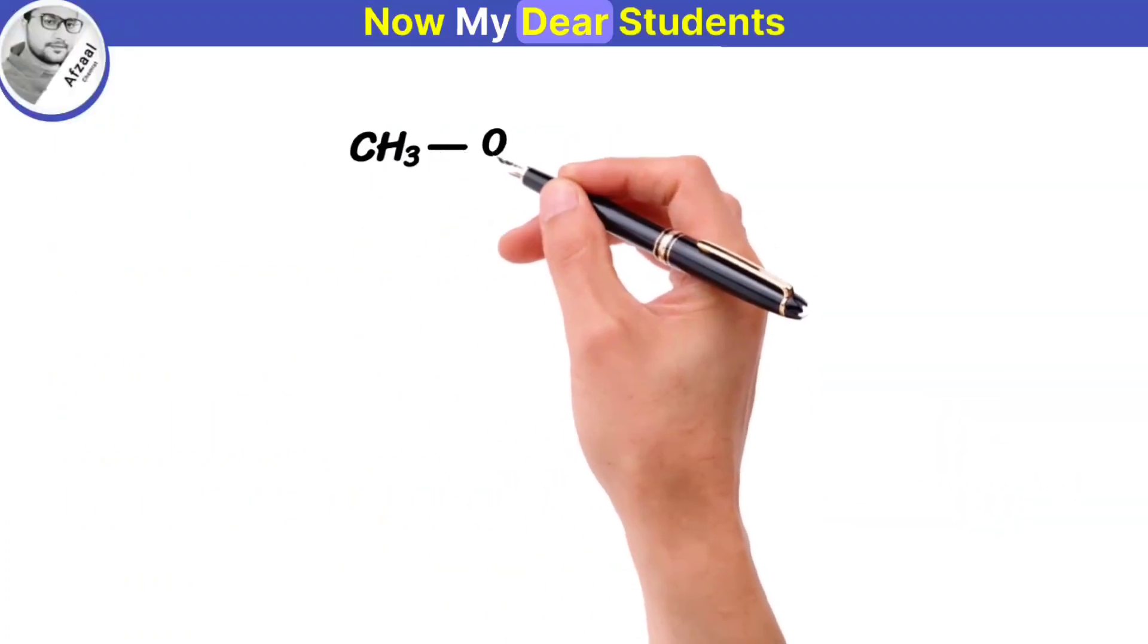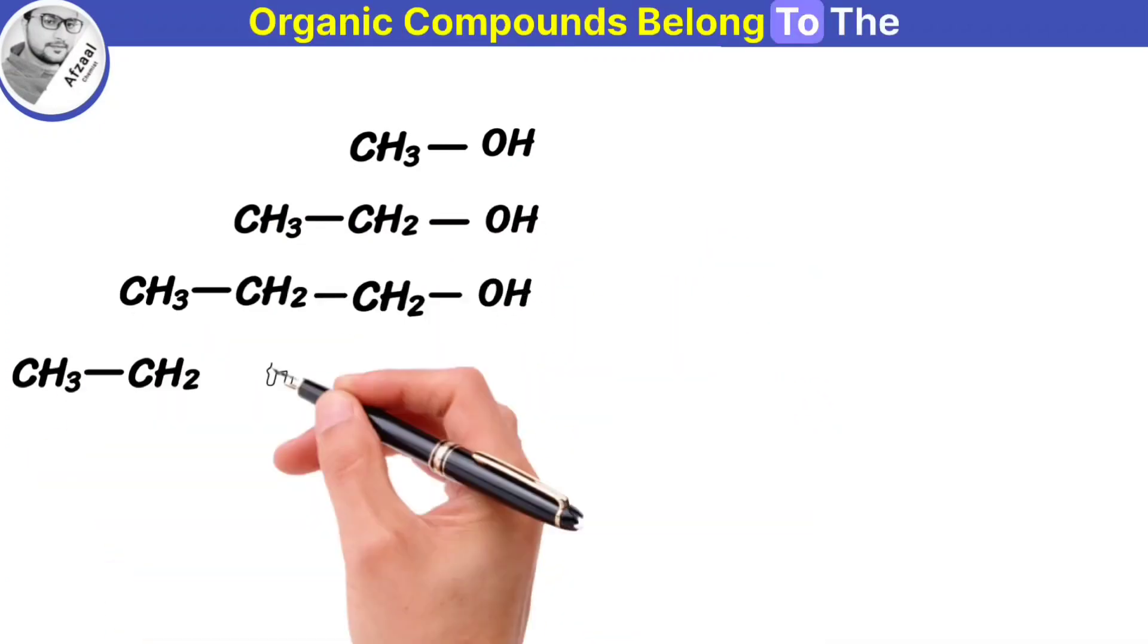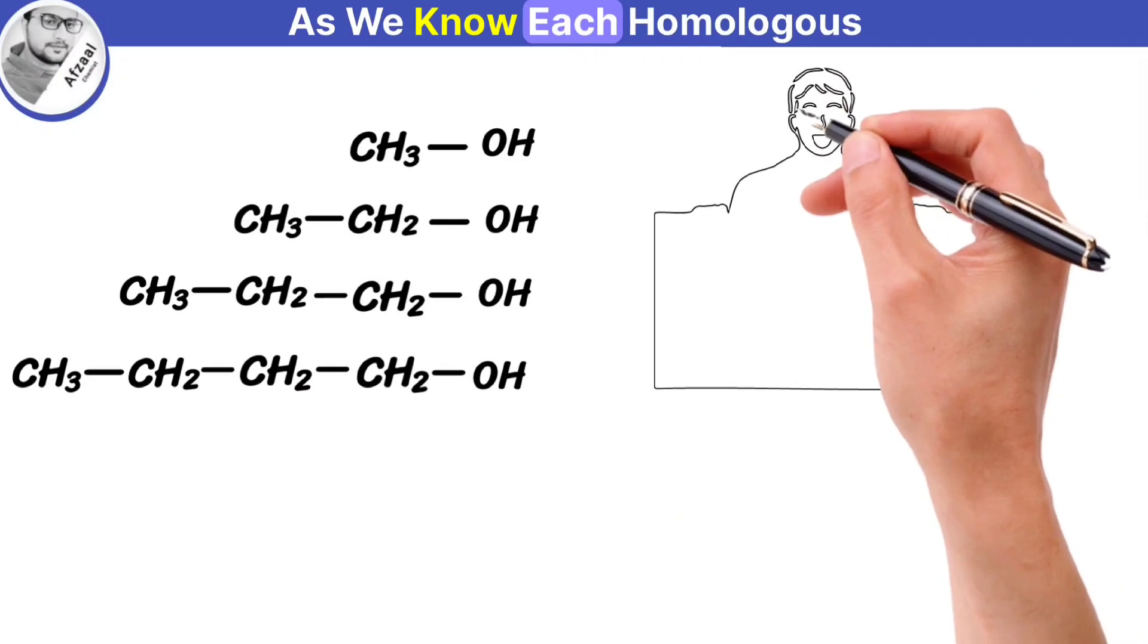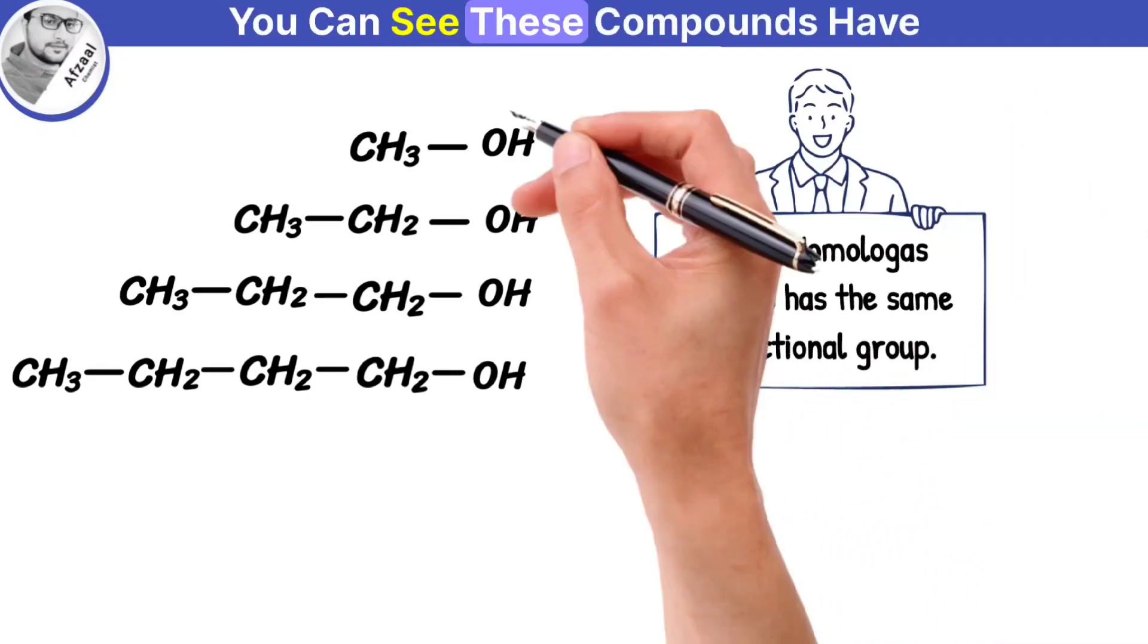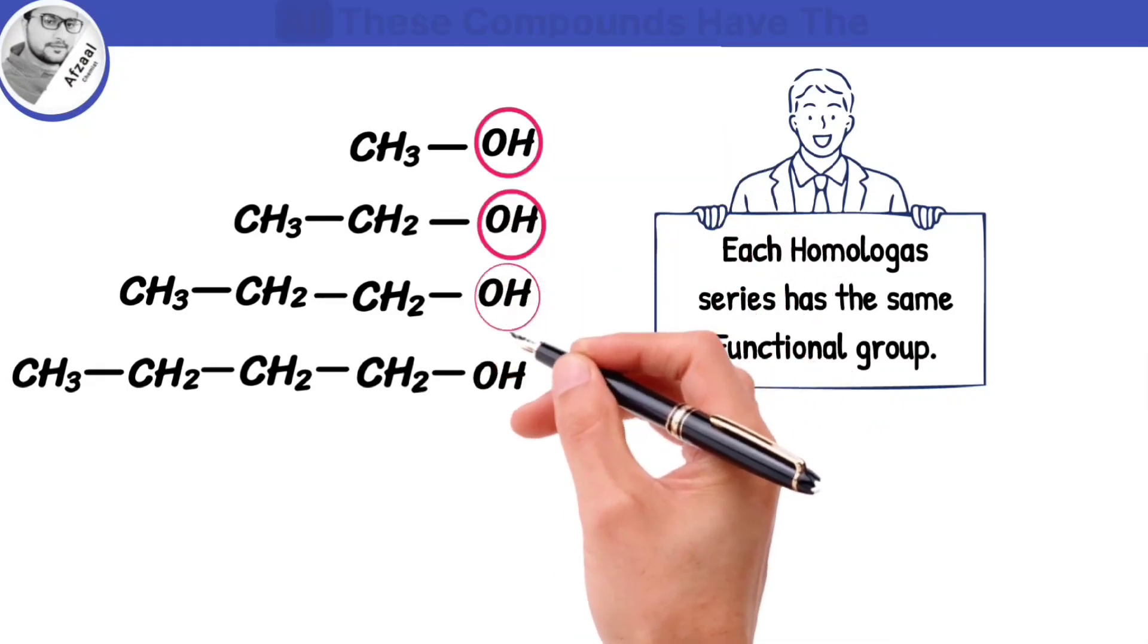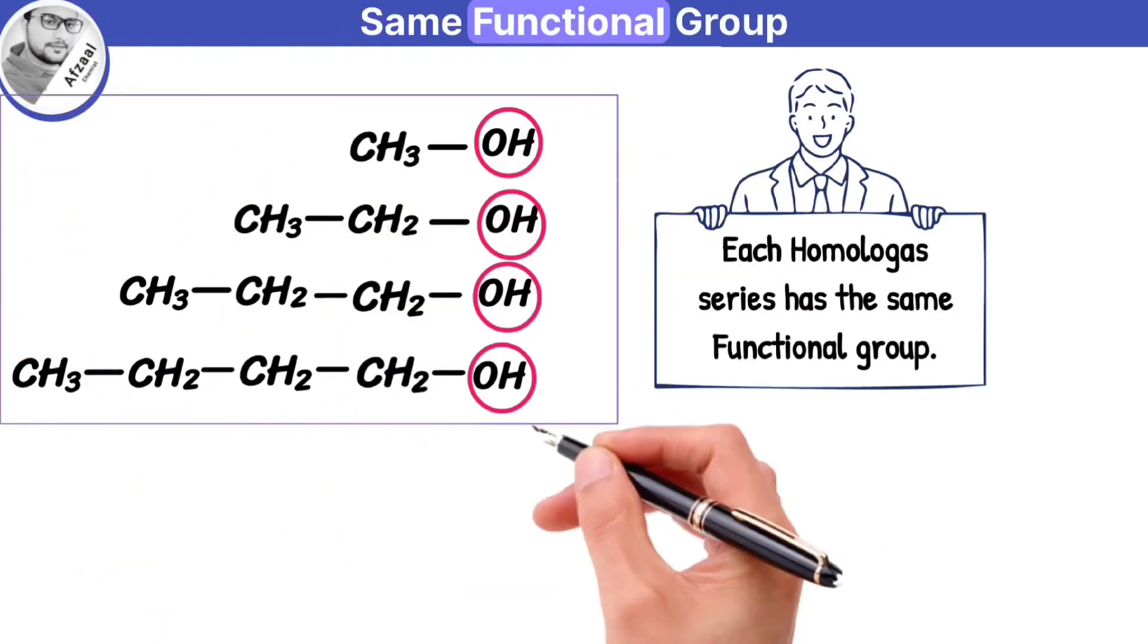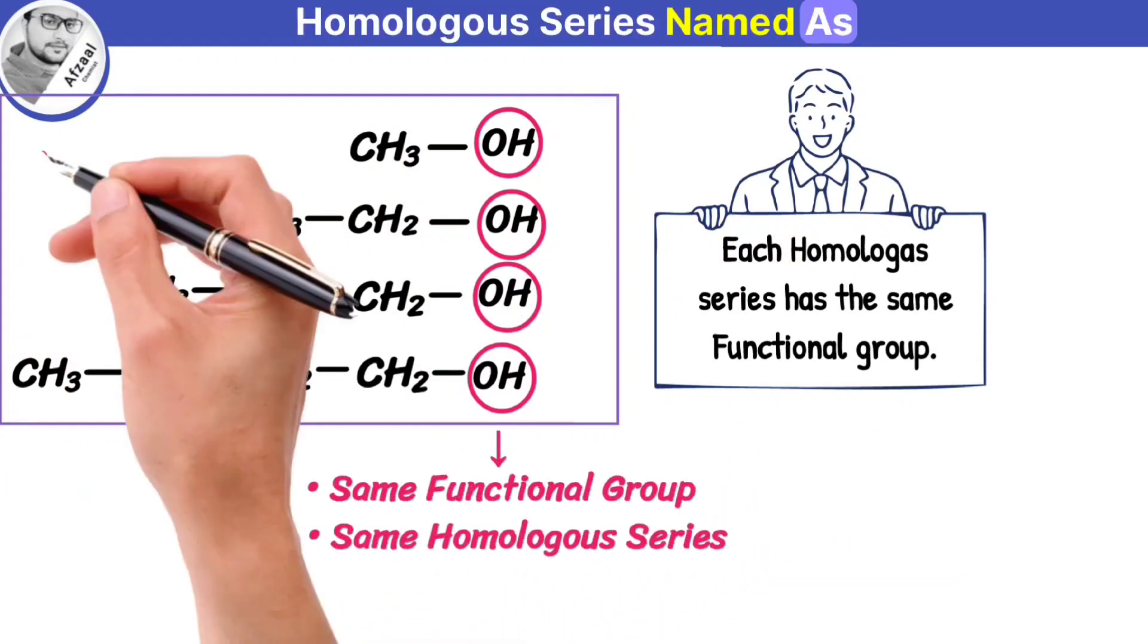Now my dear students, can you tell me, do these organic compounds belong to the same homologous series? As we know, each homologous series has the same functional group. These compounds have an OH group as a functional group. All these compounds have the same functional group, so they are classified into same homologous series, named as alcohols.